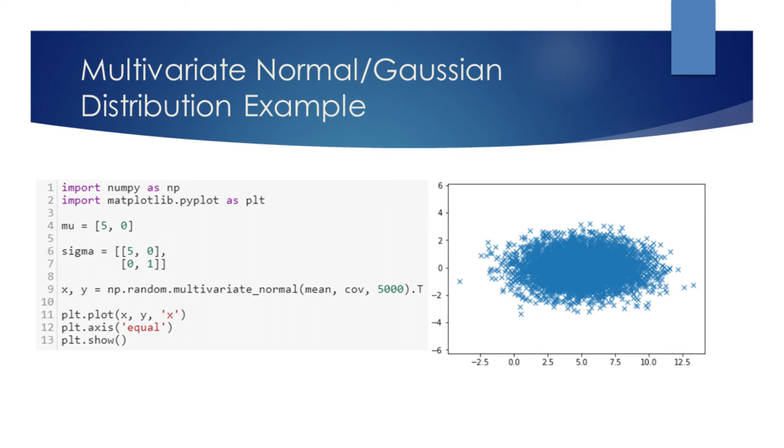This is because we specified on line 4 for the mean of the first element to be at 5, and the mean of the second to be at 0.